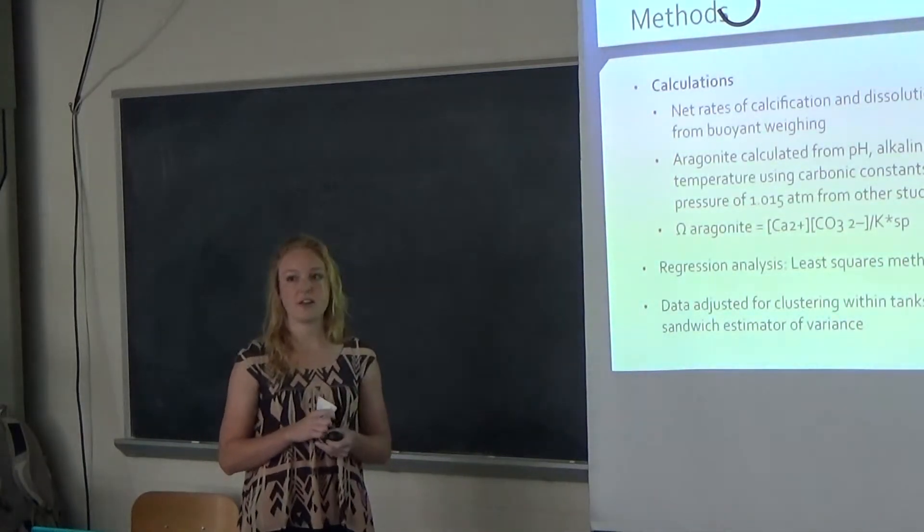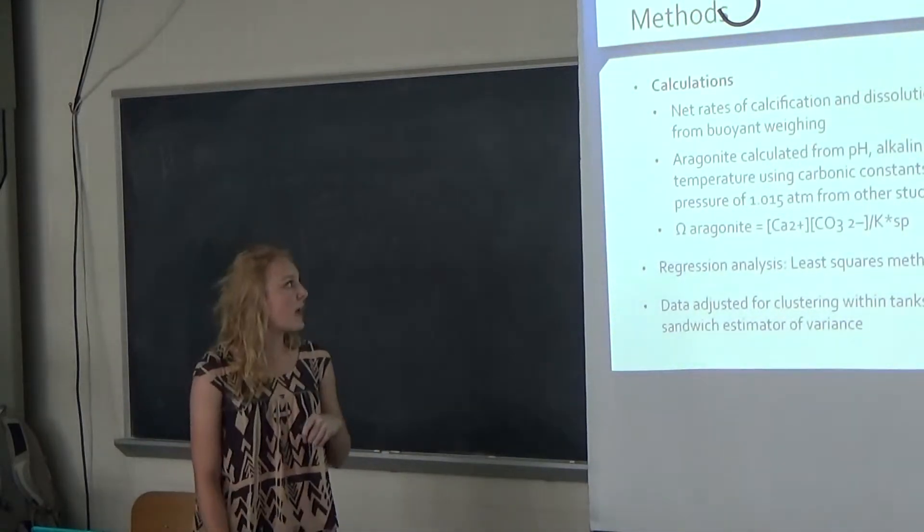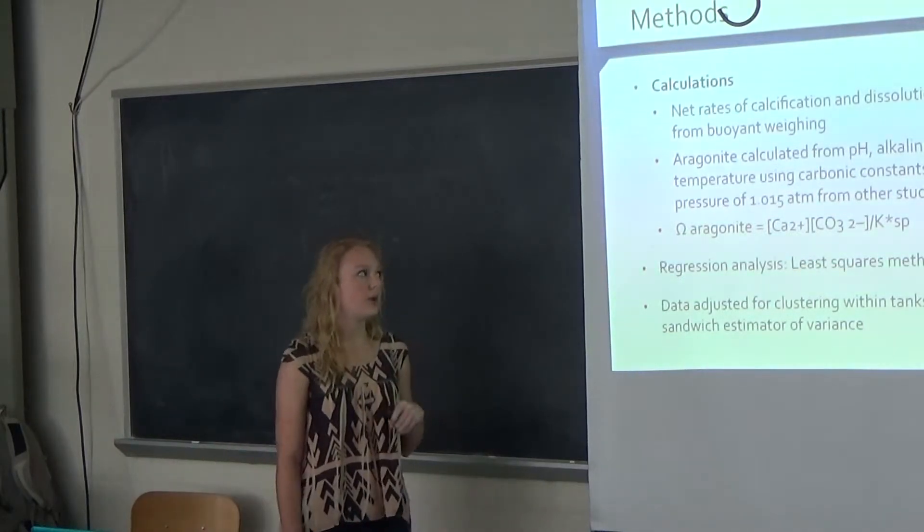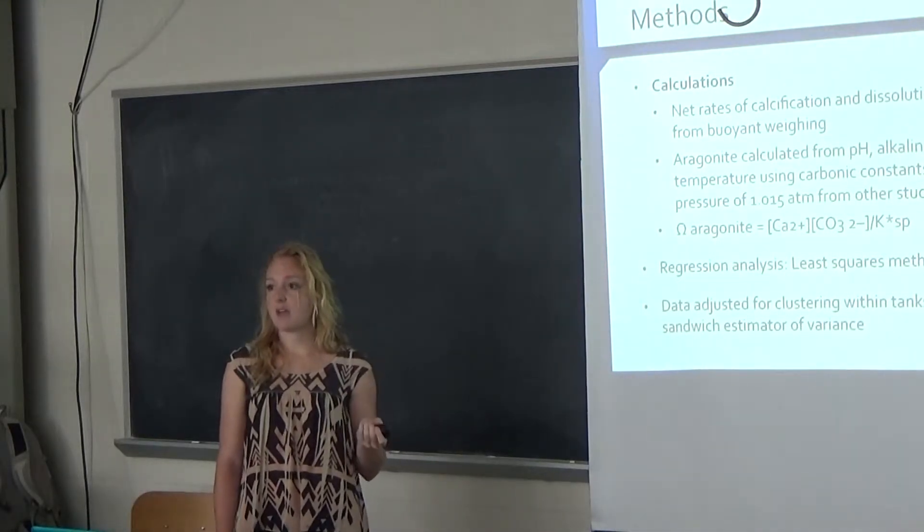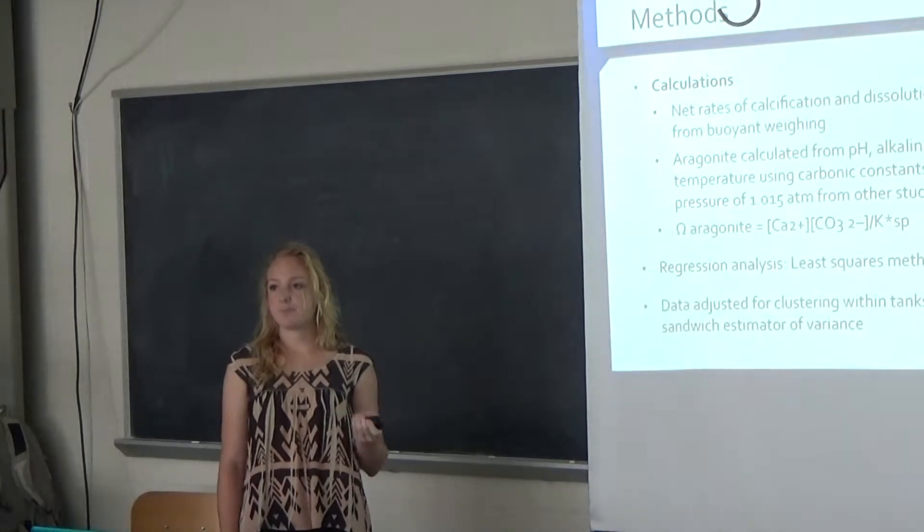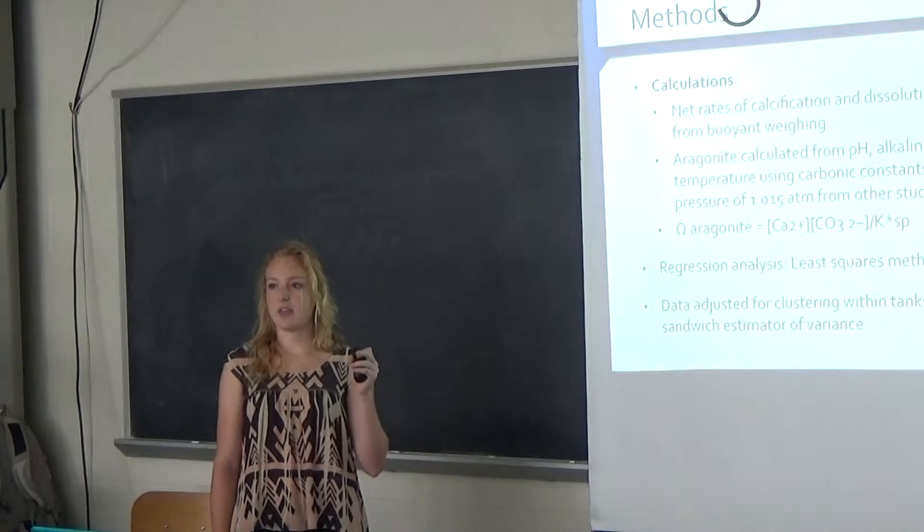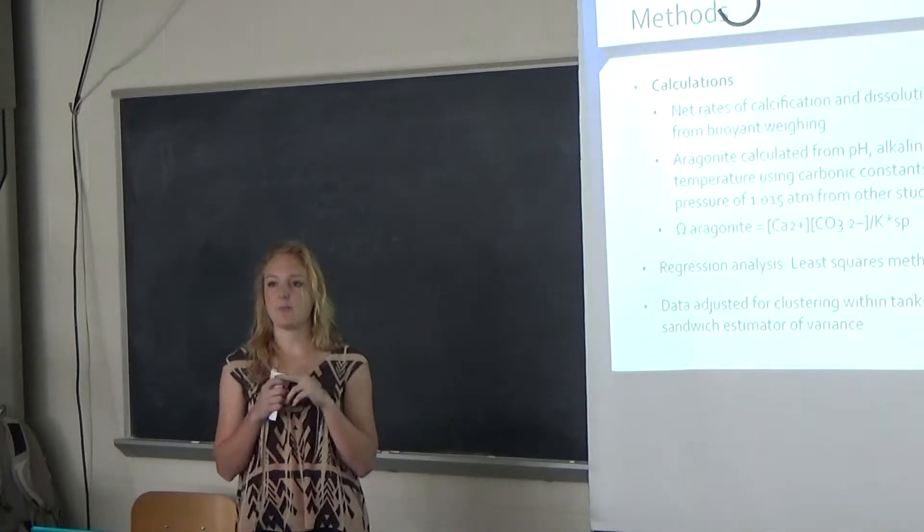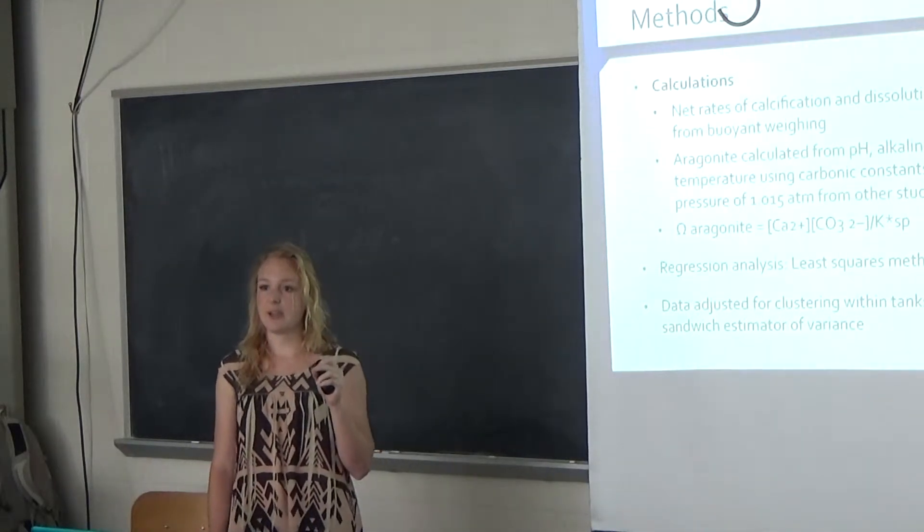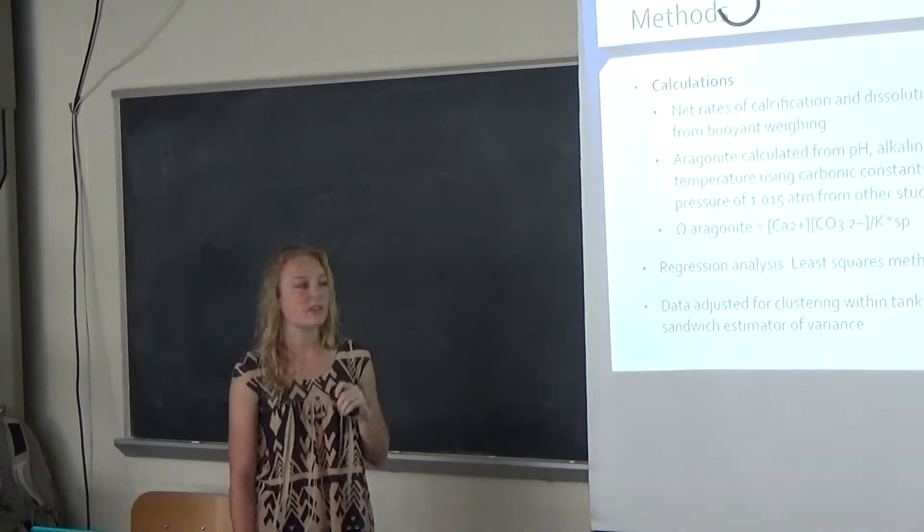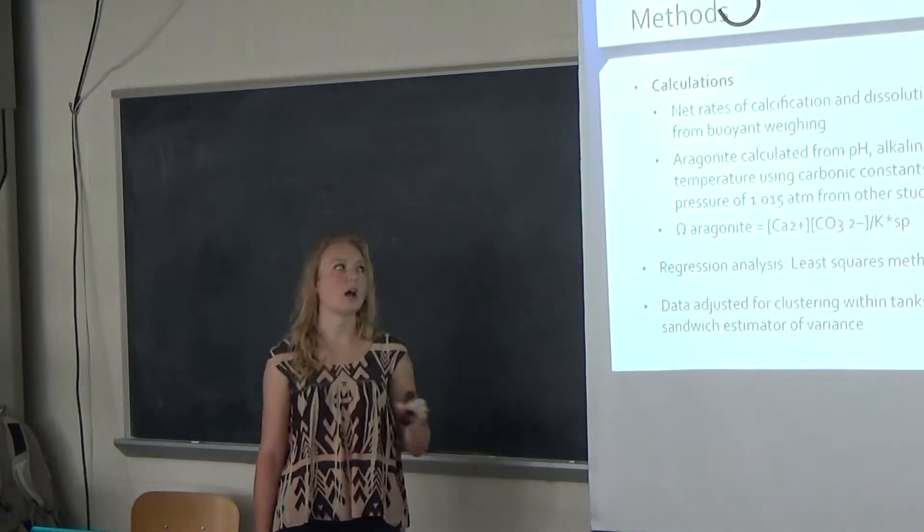From all of the data that they gathered, they had to do calculations to calculate the net calcification rates and the dissolution rates. They did this by using a method called buoyant weight. Over the 60-day period, they measured the mass of the entire calcifier, and then throughout certain points in the 60-day interval, they would take the calcification off from the shell of the organism and use that dry weight and compare it to the total calcification rate. That would calculate the calcification rate based on those certain periods of time.